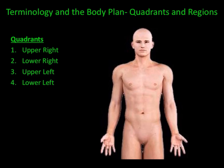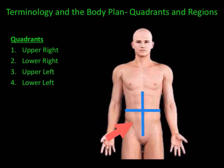Quadrants and regions help identify the locations of certain body parts or organs. Per quadrants, the body is split up into four sections: the upper right quadrant, the lower right quadrant, the upper left quadrant, and the lower left quadrant.